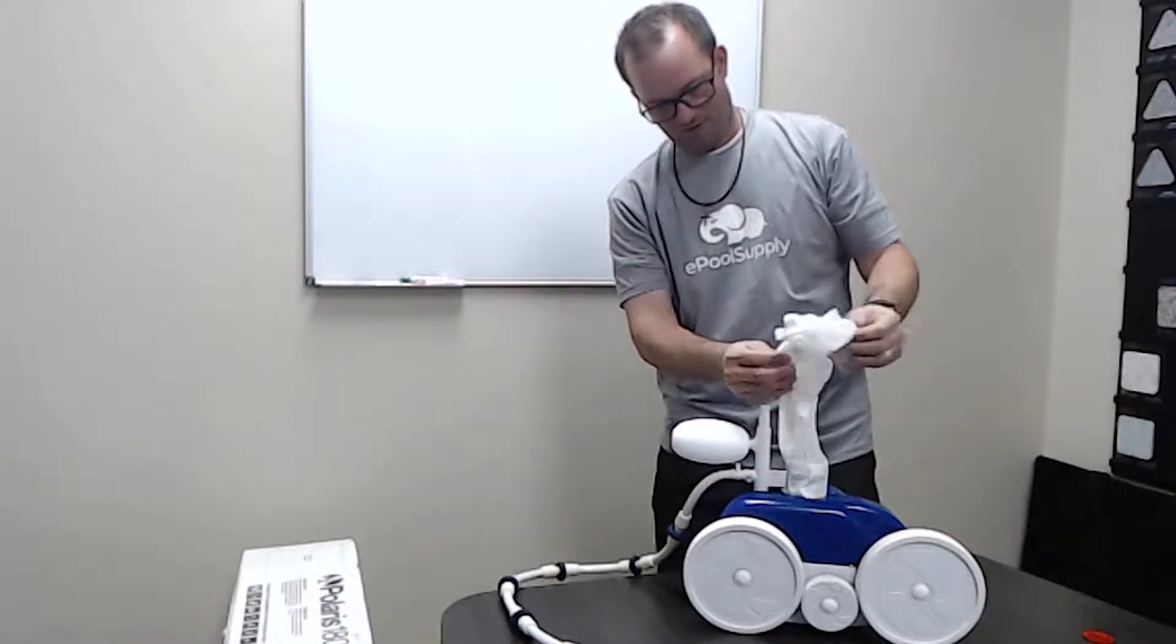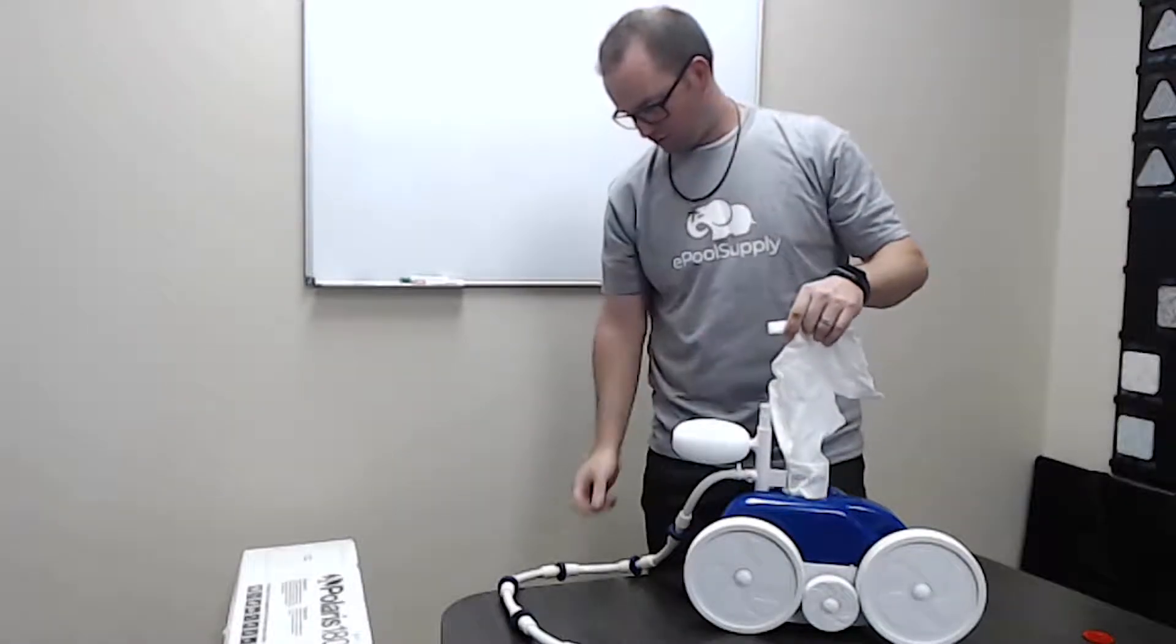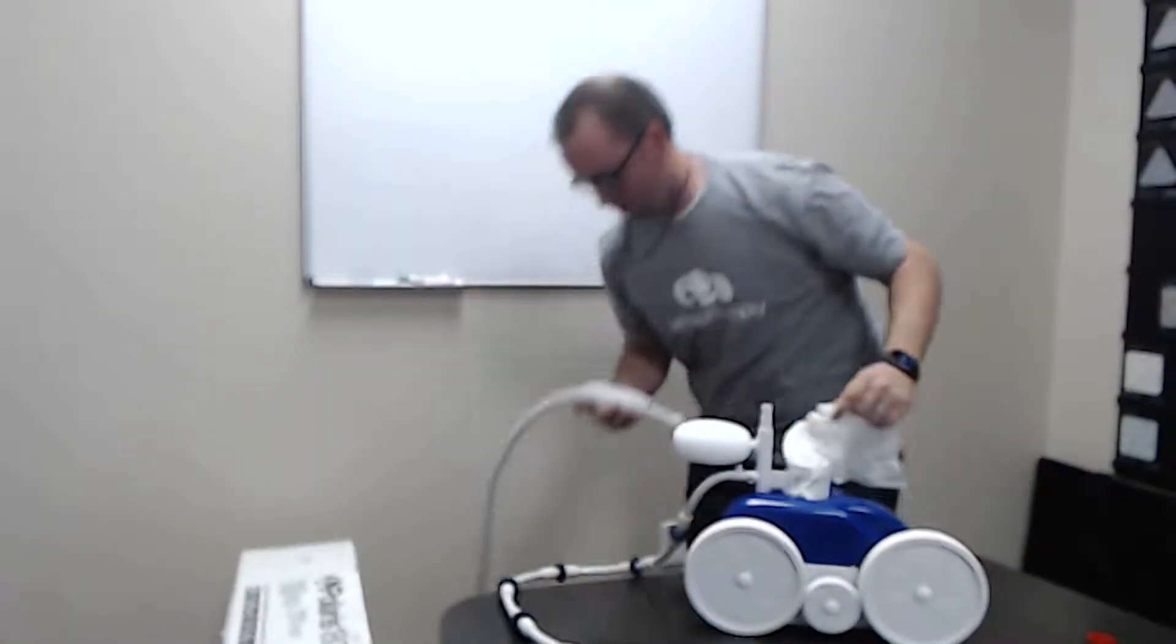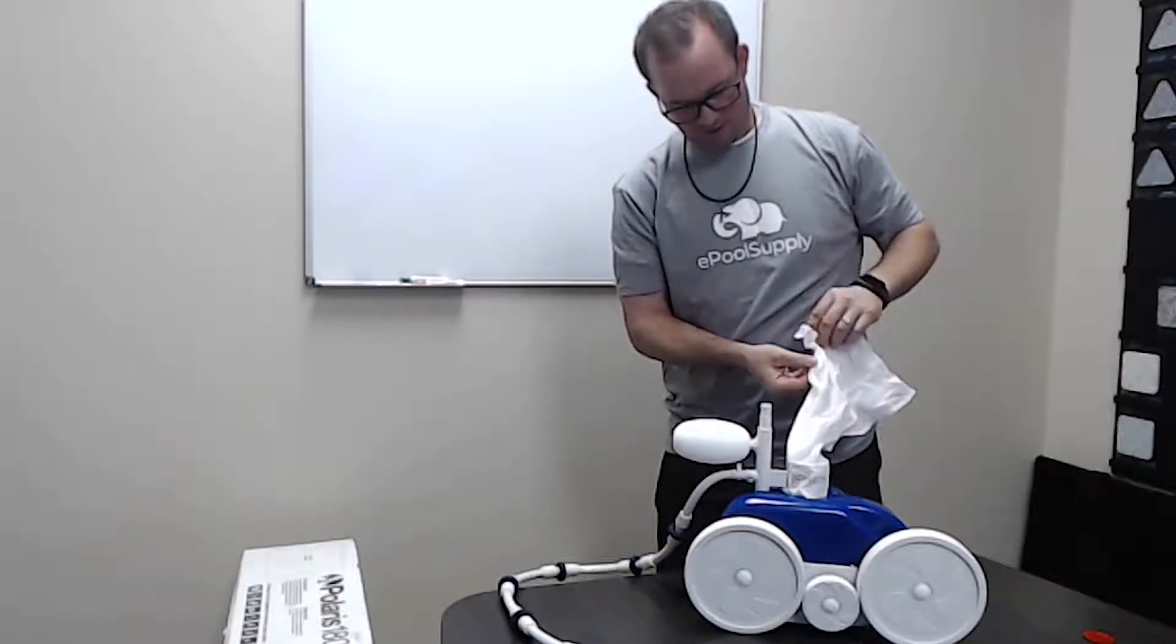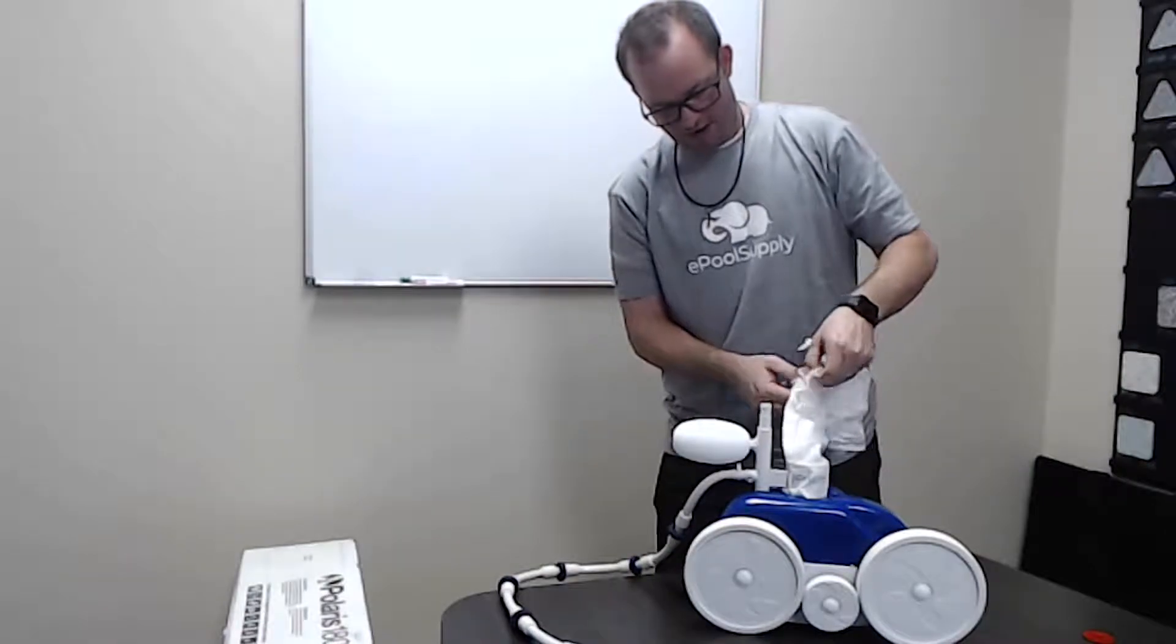The way the bag works, if you've had one before, this velcros around the actual line of the system and holds it up like this. Then you can access it to clean it out. It's a giant velcro bag to clean out the debris that gets inside.